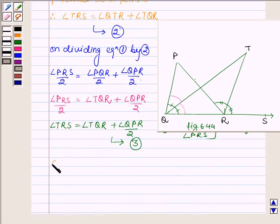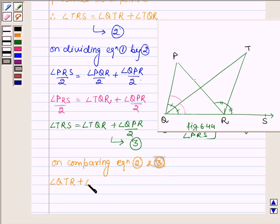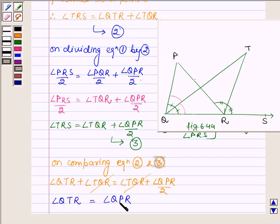Now on comparing equation 2 and equation 3, left-hand sides are equal so right-hand sides are also equal. So we have angle QTR plus angle TQR is equal to angle TQR plus angle QPR upon 2. Now TQR is common on both sides, so on canceling we have angle QTR is equal to angle QPR upon 2.